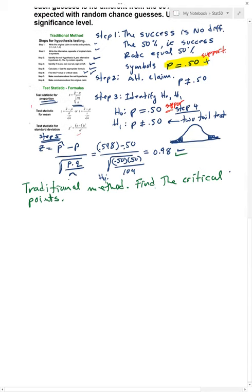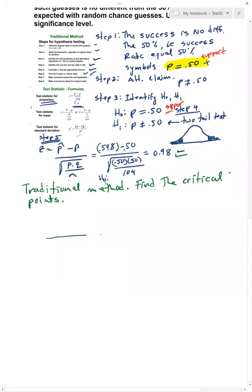To do that, I'm gonna start by drawing my curve. And my critical points are these. Alpha is 0.05, so alpha over 2 is 0.025. So that means that area there is 0.025, and that area there is 0.025.